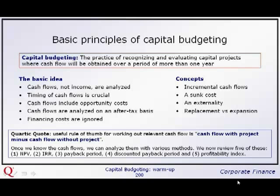The relevant cash flow we're looking at is the cash flow with the project minus the cash flow without the project — in other words, the incremental cash flows. For example, if the project generates $100,000 of cash revenues, whereas without the project we would have achieved $60,000 of revenues, then the incremental cash flow is just the $40,000.